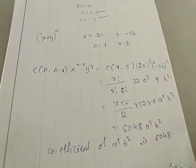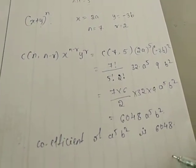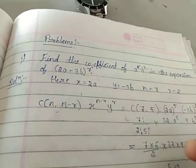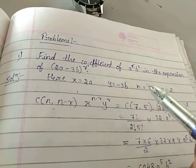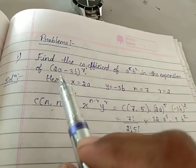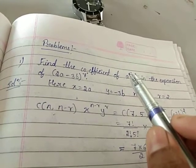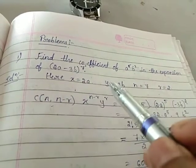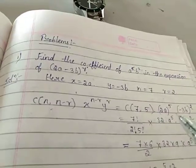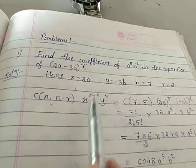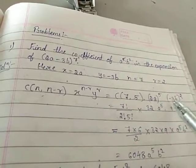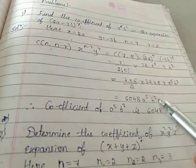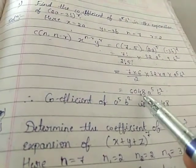Whenever a question asks to find the coefficient of a term, compare the expansion with (x+y)^n, write down x, y, and n, then compare the powers with x^(n-r) and y^r to find r. Substitute n, x, and y into the formula C(n, n-r)·x^(n-r)·y^r and simplify to get the coefficient. Here the coefficient of a^5·b^2 is 6048.